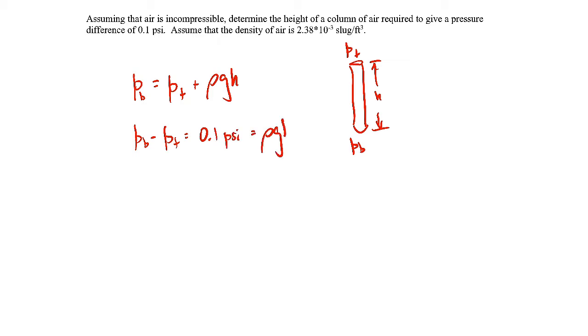We want to find that height that gives us that pressure difference. All I did to go from here to here is just subtract Pt from both sides. So we can solve for H. H would be Pb minus Pt divided by rho g.